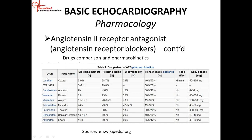Some of the common ARBs — most of you have probably come across patients taking these medicines — include losartan, candesartan, valsartan, irbesartan, telmisartan, eprosartan, and olmesartan. The ones most commonly used are losartan and valsartan. They have trade names, specific half-lives, protein binding characteristics, bioavailability, renal and hepatic clearance, and food does not significantly affect them, so patients can take them at any time.